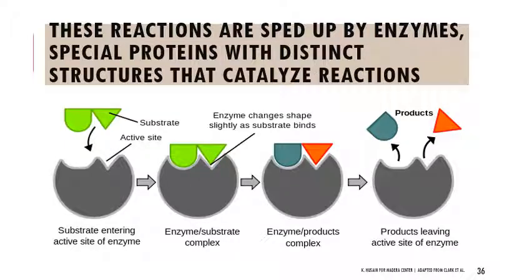All of these reactions happening in your body need to be sped up. We are dependent on proteins called enzymes that catalyze these reactions and speed them up. This diagram is what we call a lock and key model — there's a structure-function relationship between the enzyme and what it's acting on, called the substrate. For now, just keep in mind that enzymes are very particular in structure, they're proteins, and they speed up chemical reactions.